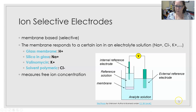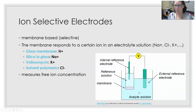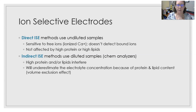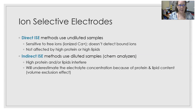This diagram shows you the external reference electrode, the internal reference electrode, the reference solution, the membrane, and the analyte solution — which is the sample. That is a very basic diagram of the ISE. In chemistry, you will see direct ion selective electrode methods, which use undiluted samples.